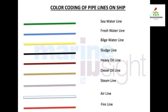On ships: green is used for the sea water line, blue is used for the fresh water line, yellow is used for the bilge water line, black is used for the sludge line, brown is used for the heavy oil line and diesel oil line, and white is used for the airline. The fire line is red.